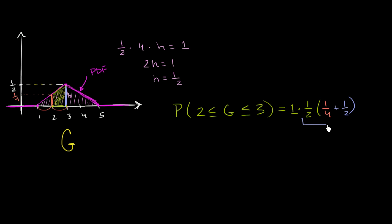So 1/4 plus 1/2. And so this part of the expression gives us our mean density over this range. And it's linear, so it works out well for us. If this was a curve, once again, we'd have to break out the calculus. But we're really just taking the area of this trapezoid.